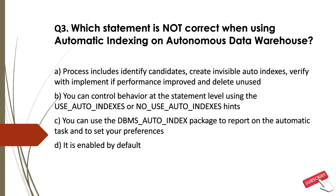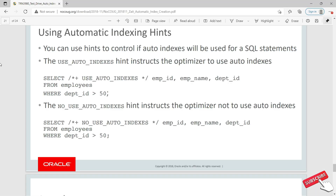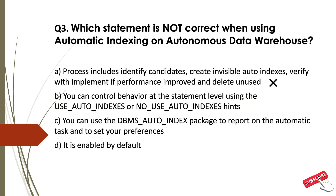Analyzing the options — Option A describes the process including identify candidates, create invisible auto-indexes, verify with incremental performance improvement, and delete unused. This is true for automatic indexing for Autonomous Data Warehouse. But the question asks to select which is NOT true. Hence, this is an incorrect choice. Option B: You can control behavior at the statement level using USE_AUTO_INDEXES or NO_USE_AUTO_INDEXES hints. The USE_AUTO_INDEXES hint instructs the optimizer to use auto-indexes, whereas NO_USE_AUTO_INDEXES instructs the optimizer not to use them. So Option B is true — hence incorrect as an answer.